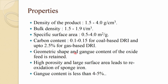Whatever gang is present, it is retained within that sponge iron or direct reduced iron. High porosity and large surface area lead to reoxidation of sponge iron, because the reduction of oxides creates a large surface area that leads to reoxidation when it comes in contact with air. Gang content is less than 4.5 to 5 percent.